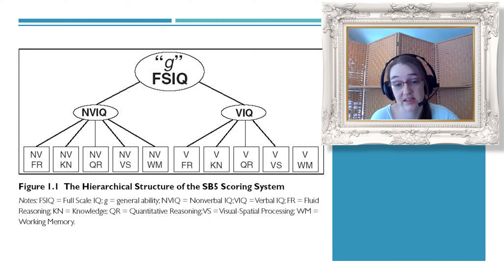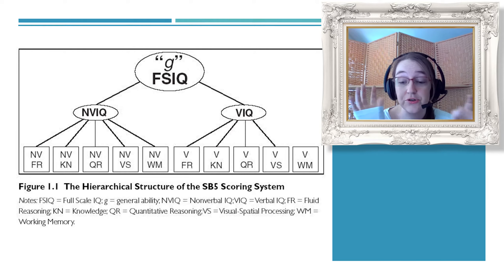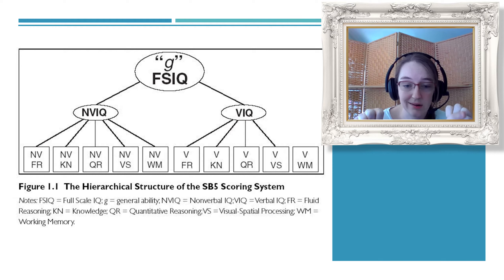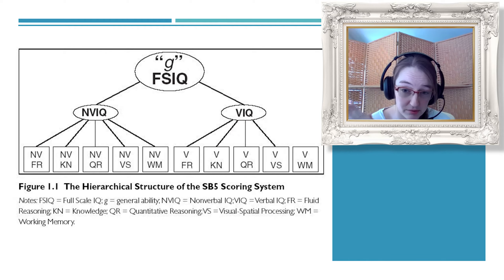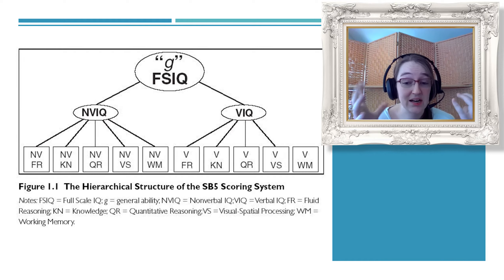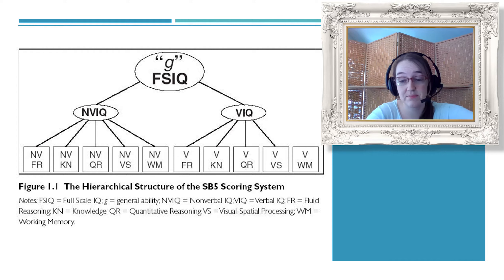Scoring the Stanford-Binet 5 takes into account this structure. It's got the general full-scale IQ as G, then it's broken into two chunks: the nonverbal and verbal components. Within those chunks it breaks down further — nonverbal fluid reasoning, knowledge, quantitative, visual-spatial, and working memory — and the same for verbal. It's a different way to nest the data compared to the last slide where G came first and then nonverbal/verbal, essentially flipping the layers.